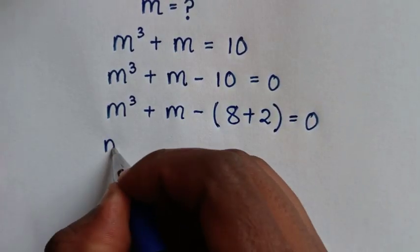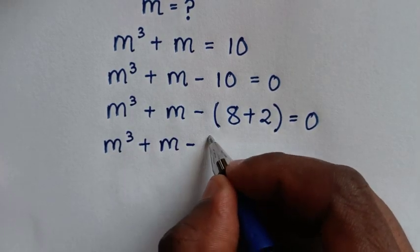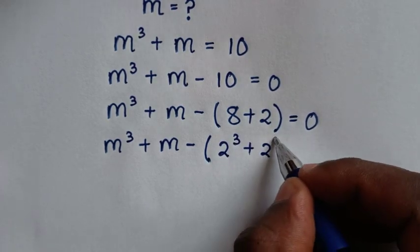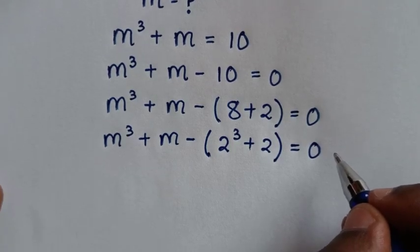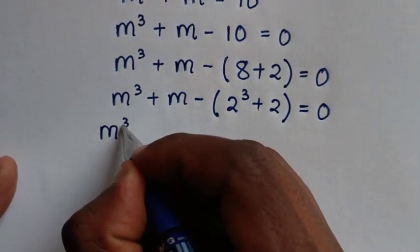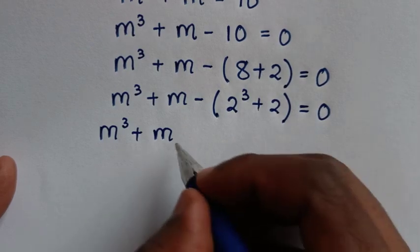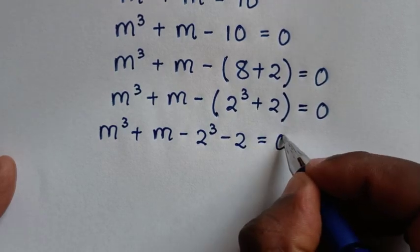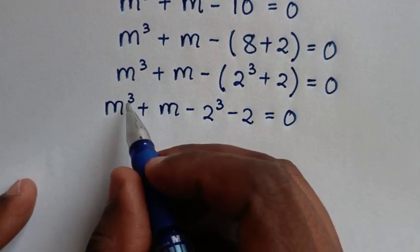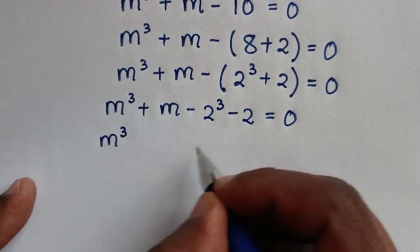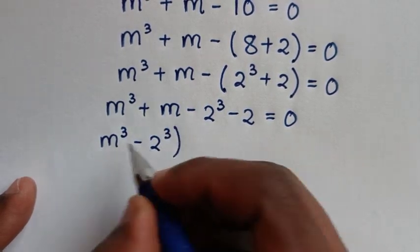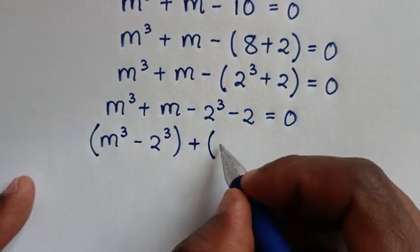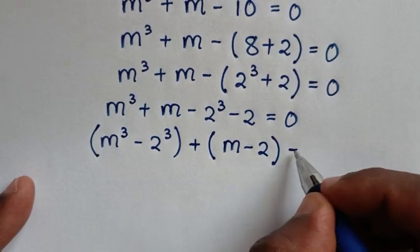Then it will be m³ + m - (8 + 2) = 0, where 8 is the same as 2 to the power of 3. We take the negative inside the bracket, so it becomes m³ - 2³ + (m - 2) = 0.